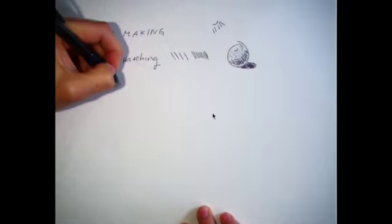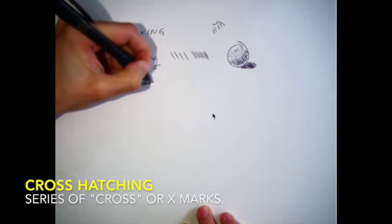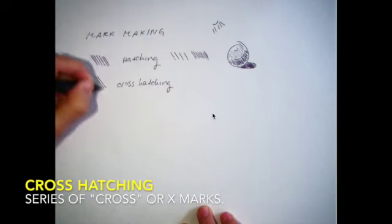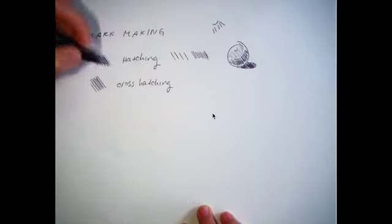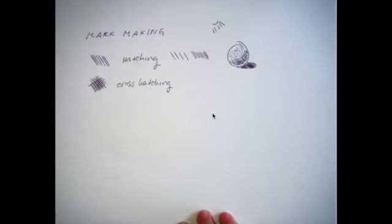The other one that I know we've talked about, or we talked about in Art 1, is crosshatching. So with crosshatching, it's a lot like hatching. You're making marks going in the same direction, but then you make marks going in the opposite direction, perpendicular to those original marks, to make a cross.